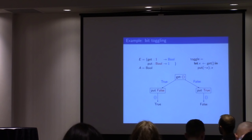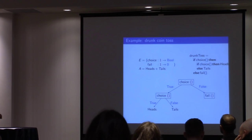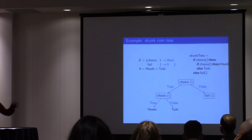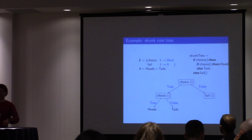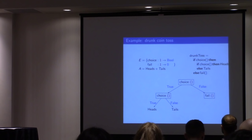Another example: we might have a choice operation and a fail operation. Imagine I'm a drunk and I want to toss a coin. There's a 50-50 chance I'll just drop the coin and it rolls into the gutter, and then I get no result at all — that's what failure is for. First we decide whether I drop the coin and might fail. If I succeed, then it's either heads or tails.